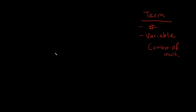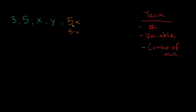Let me give you some examples of terms. It can be a number — so if you just saw the number 3, that would be a term. If you saw the number 5, that would be a term. It could be a variable — so if you saw just x by itself, that's a term. If you saw y by itself, that's a term. Or it can be a combination: like 5x, because that's the same thing as 5 times x. Or 3y, because that's the same thing as 3 times y. Or you could have 5 squared, because that's the same thing as 5 times 5 — a combination of multiplying two numbers together.